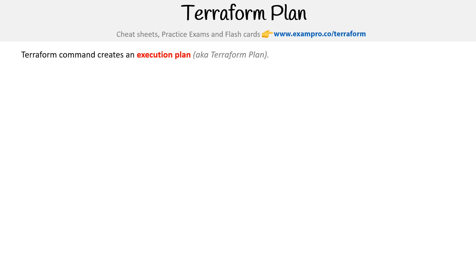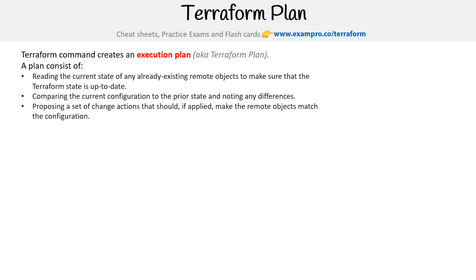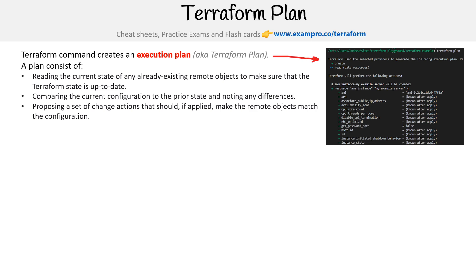Let's talk about terraform plans. This command creates an execution plan, also known as a terraform plan. It consists of reading the current state of an already existing remote object to make sure that the terraform state is up to date, comparing the current configuration to the prior state and noting any differences, and proposing a set of change actions that, if applied, make the remote objects match the configuration.